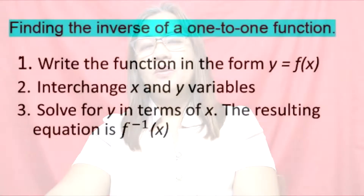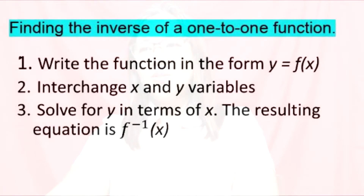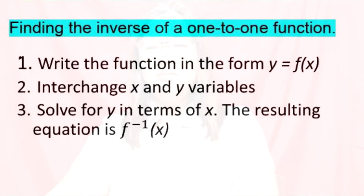How to find the inverse of a one-to-one function? Step 1: write the function in the form y = f(x). Step 2: interchange the x and y variables. Step 3: solve for y in terms of x. The resulting equation is f⁻¹(x), the inverse function of x.